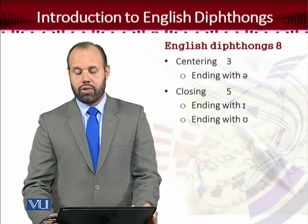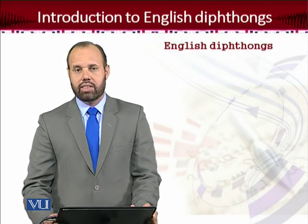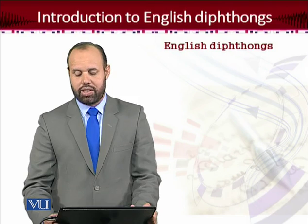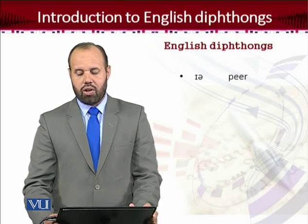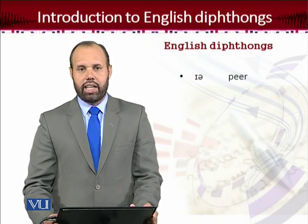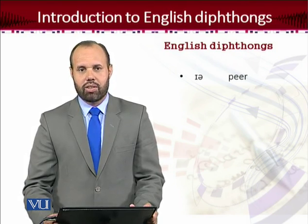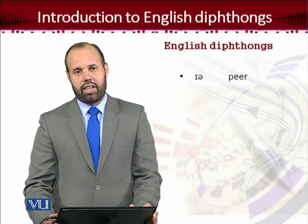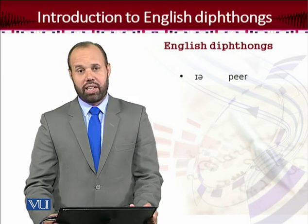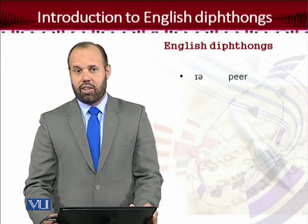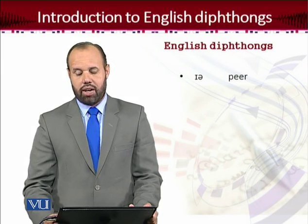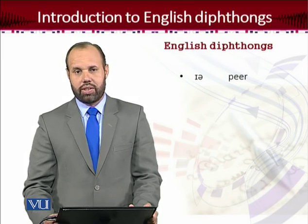Now let me give you examples of these eight diphthongs with words from English. The first diphthong is /ɪə/. The starting vowel is /e/ and the ending is schwa — /ɪə/. In words like 'peer,' 'seer,' or 'shear.' These are the words which have this /ɪə/ sound.